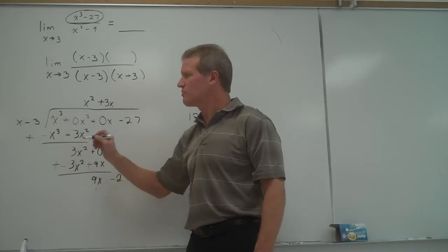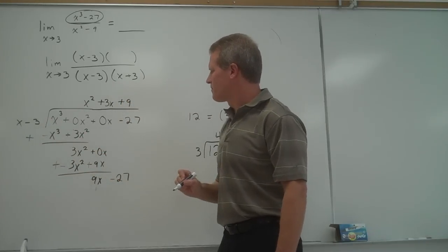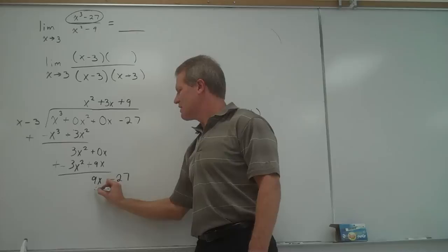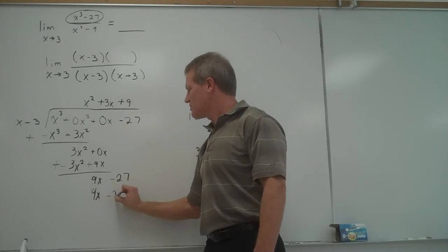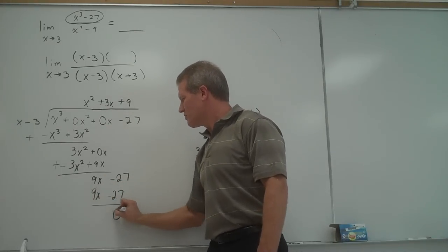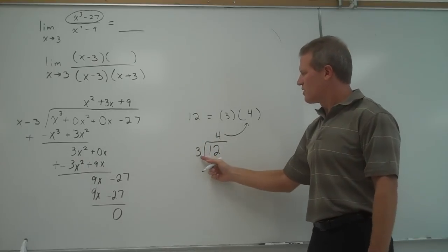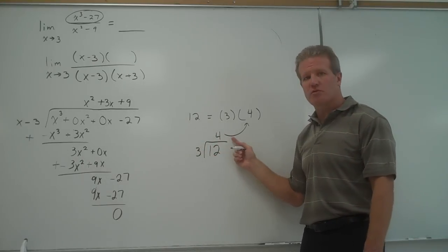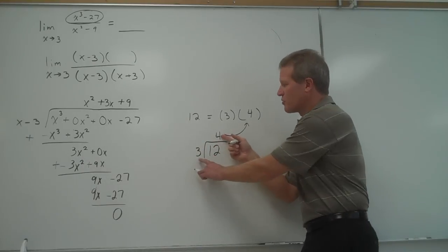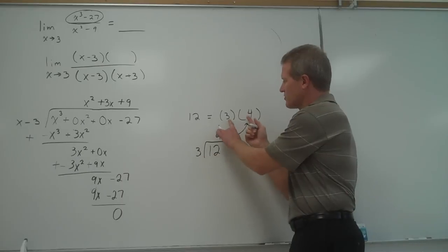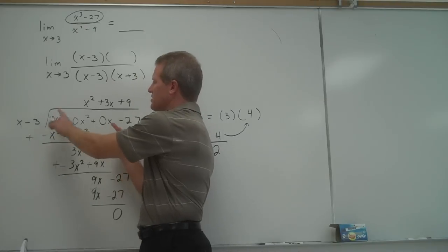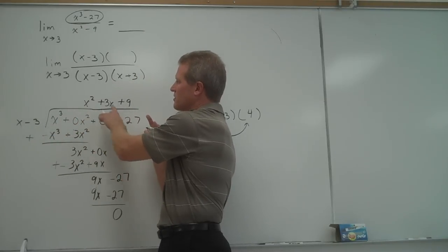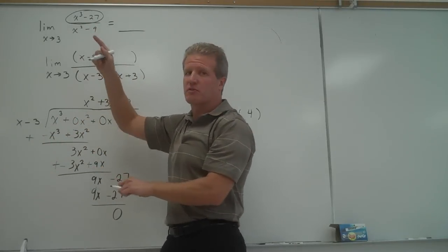Multiply 3x times x is 3x squared minus 9x. I subtract. Instead of subtracting, I add the opposite, which gives me 9x. Bring down the minus 27. 9x divided by x would be plus 9. 9 times x is 9x. 9 times negative 3 is negative 27. We get a remainder of 0. Just like when we took 12 divided by 3, we got 4 with a remainder of 0. A remainder of 0 tells me that both of these numbers are factors of 12. Same thing here. The remainder of 0 tells me that x minus 3 times this answer equals x cubed minus 27.